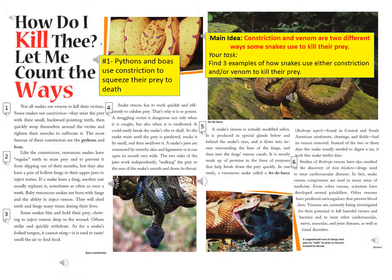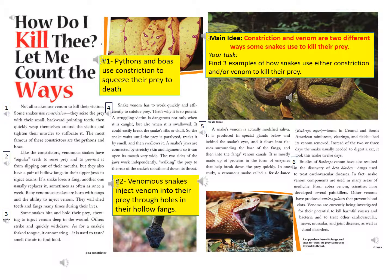Paragraph 2: Like the constrictors, venomous snakes have regular teeth to seize prey and to prevent it from slipping out of their mouths, but they also have a pair of hollow fangs in their upper jaws to inject toxins. If a snake loses a fang, another one usually replaces it, sometimes as often as once a week. Baby venomous snakes are born with fangs and the ability to inject venom. After re-reading paragraph 2, I saw that venomous snakes actually inject venom into their prey through holes in their hollow fangs — that is an example of how snakes use venom to kill their prey.